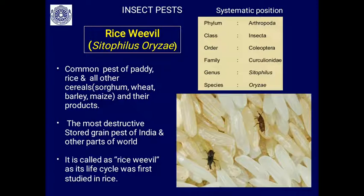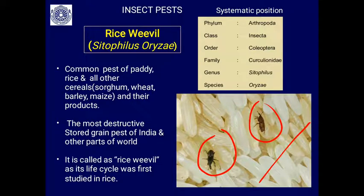It is a common pest of paddy, rice, and all other cereals including sorghum, wheat, barley, and maize, as well as their products. It is the most destructive stored grain pest in India and other parts of the world. You can see rice grains infested by the adult of Sitophilus oryzae. It is called the rice weevil because its life cycle was first studied in rice.